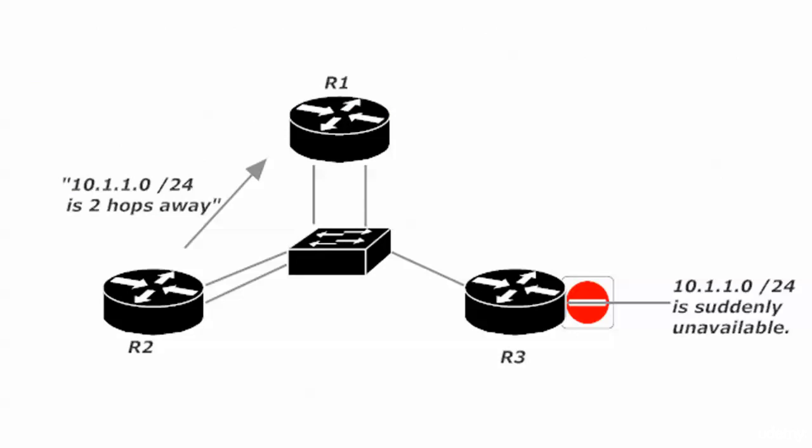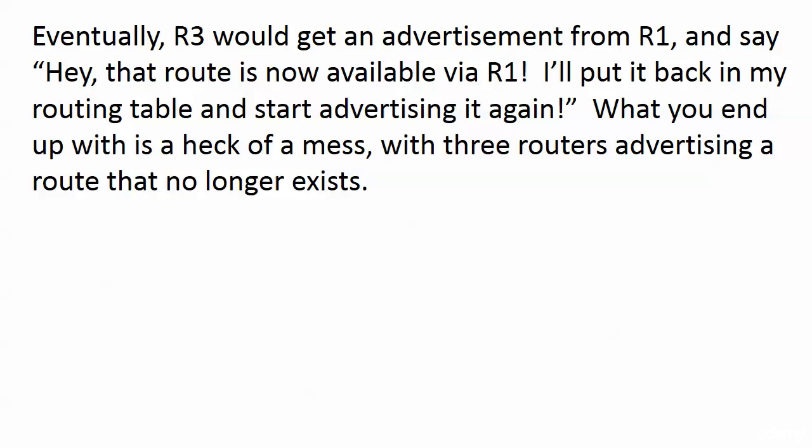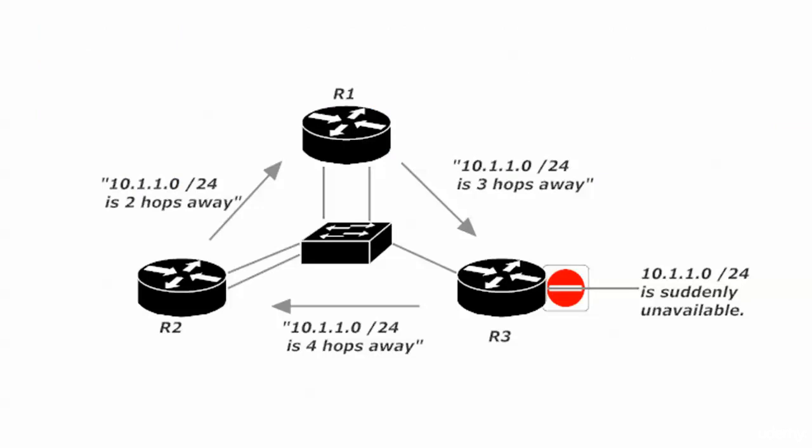It's not enough for router 3 to stop advertising it — it has to tell everybody that route just isn't around anymore. Without route poisoning, router 3 gets an advertisement from router 1 saying that route is now available via router 1, so it puts it back in its routing table and starts advertising it again. Router 1 sends an update saying it knows where 10.1.1.0 is — it's three hops away. Router 3 adds it back and advertises it as four hops away. This is how routing loops form in a larger network.